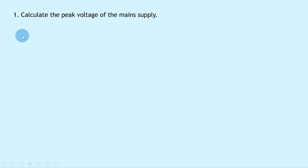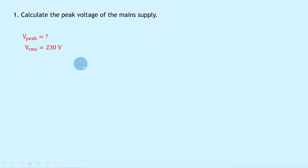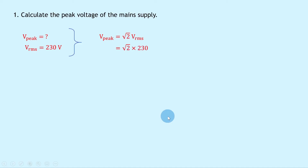For voltage, question one says to calculate the peak voltage of the main supply. Writing down what we know from the question, we're trying to find Vpeak. We know that Vrms is 230 volts for the main supply, and that's something you need to remember. Writing down our equation, we have Vpeak equals root 2 times Vrms. Substituting in the numbers gives us root 2 times 230, and putting that into your calculator should give you an answer of 325 volts.